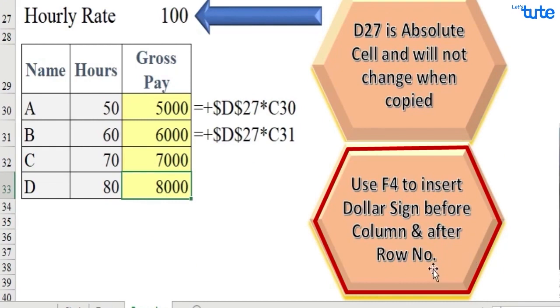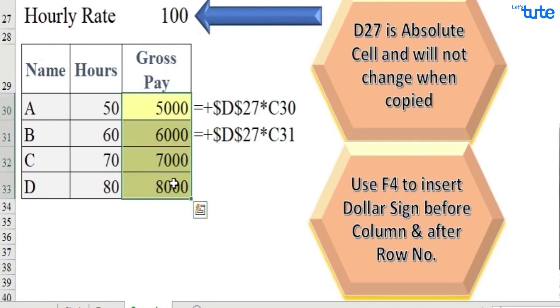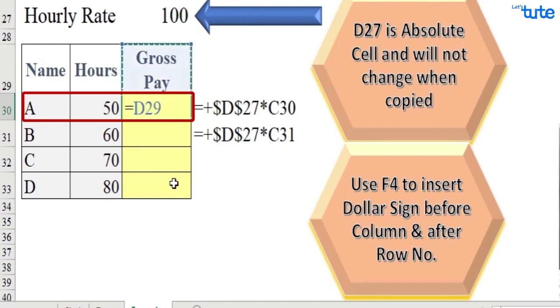Let's repeat it so it will be crystal clear to you. First equals, then cell D27, after that press F4, then multiply it with hours cell, enter, and then copy it for all.